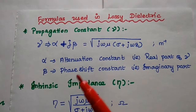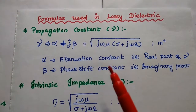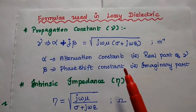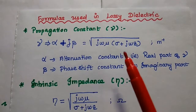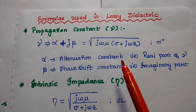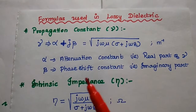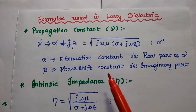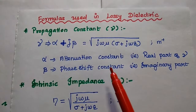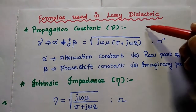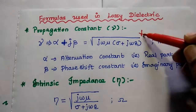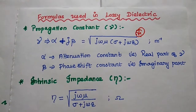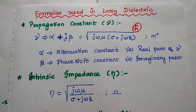Here alpha represents the attenuation constant, that is the real part of this propagation constant. Beta is the phase shift constant, that is the imaginary part. This formula is important in this lossy dielectric problem.